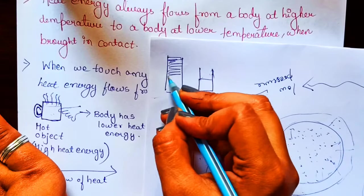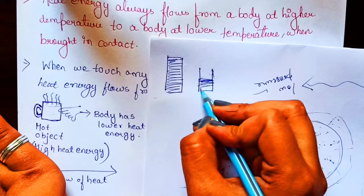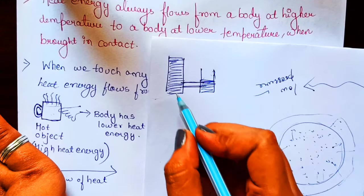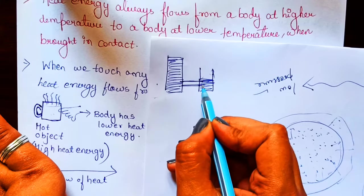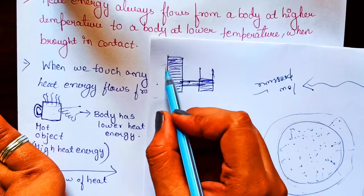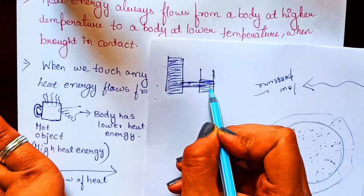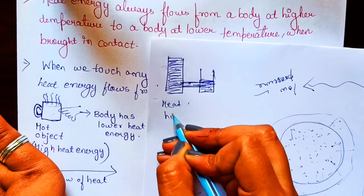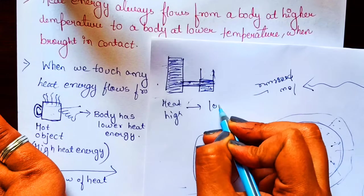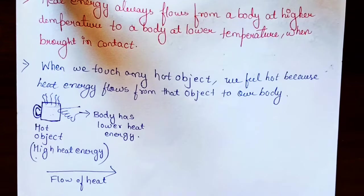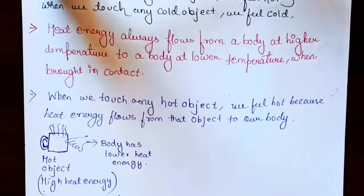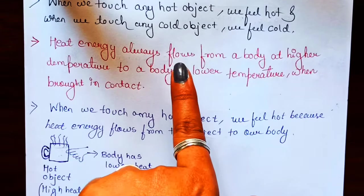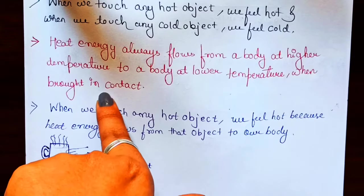To understand this with an analogy: imagine two water tubes connected together — one with more water and one with less. When connected, water flows from the higher level to the lower level. Similarly, heat energy always flows from a body at a higher temperature to a body at a lower temperature when they are brought in contact.